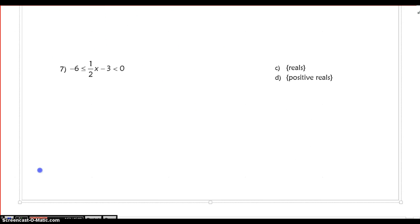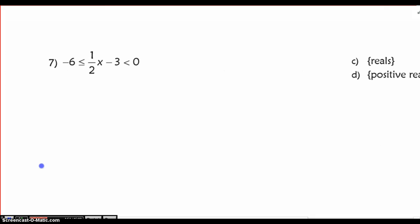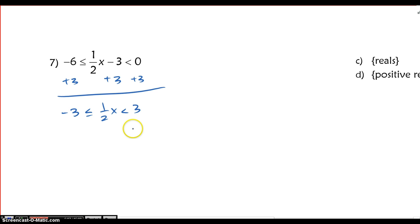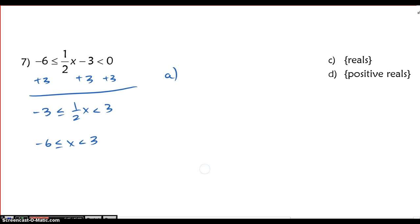All right, let's wrap this up now with number 7. So in number 7, I'm going to add 3 to either side here of this compound inequality. And I'm going to multiply by 2 throughout to get negative 6 is less than or equal to x is less than 3. So when I graph this with respect to all reals, I have a closed circle on negative 6, open circle on 3, and all the values in between as part of my solution set.